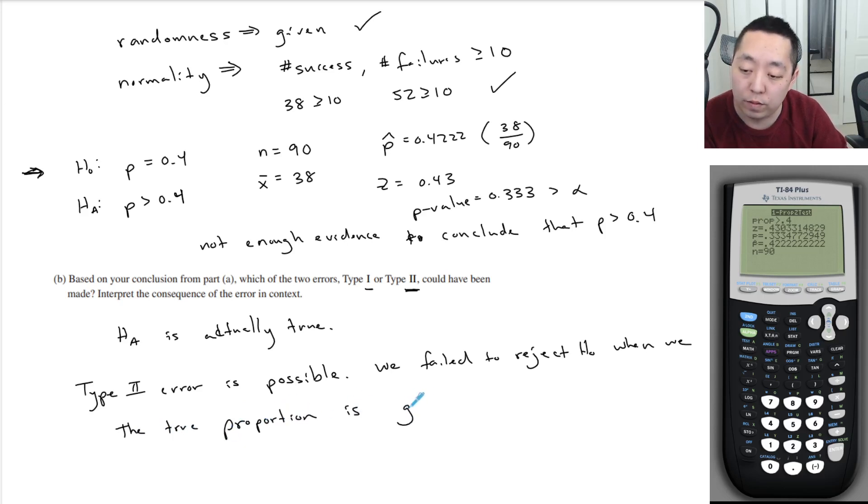basically what that would mean is that the true proportion is greater than 0.4. But we did not have enough evidence